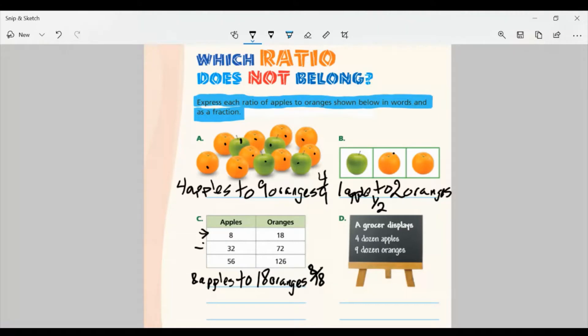We have eight apples to 18 oranges. Now to write that as a fraction, we just have apples over oranges, right? So that's going to be eight over 18. Pretty easy. The second row, we have 32 apples to 72 oranges. It's a good thing we don't have to count these things, right? So that would be 32 over 72. In the last row, we have 56 apples to 126 oranges. So again, fraction would just be apples over the oranges, right? So 56 over 126.